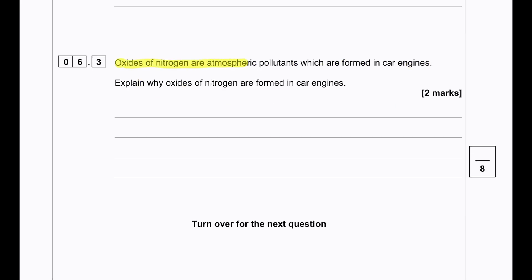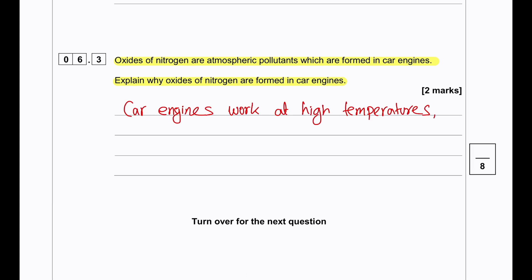Oxides of nitrogen are atmospheric pollutants which are formed in car engines. Explain why oxides of nitrogen are formed in car engines. Inside the car engine, the engine works at a very high temperature. So the engine combines the nitrogen from the air with the oxygen in a reaction at high temperature.